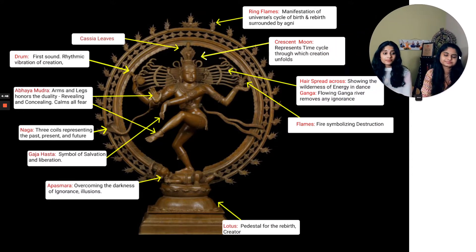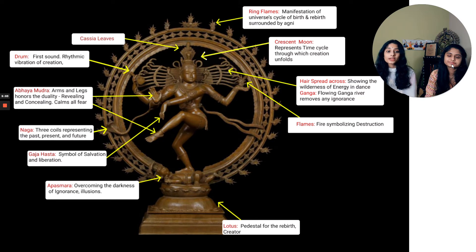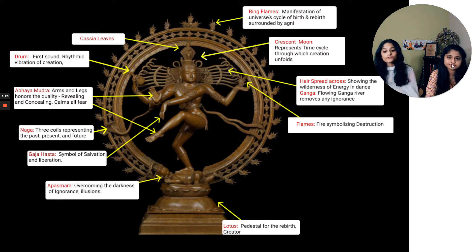Now let's talk about what each part of the Nataraja idol symbolizes. Lord Nataraja represents the creator, preserver, and the destroyer. There is a ring of flames showing the manifestation of the universe's cycle of birth and rebirth, which follows the rhythm played by Lord Shiva's Damaru — also known as a drum. The crescent moon represents the time cycle through which creation unfolds — from the scientific perspective, that's the cycle from new moon to full moon.